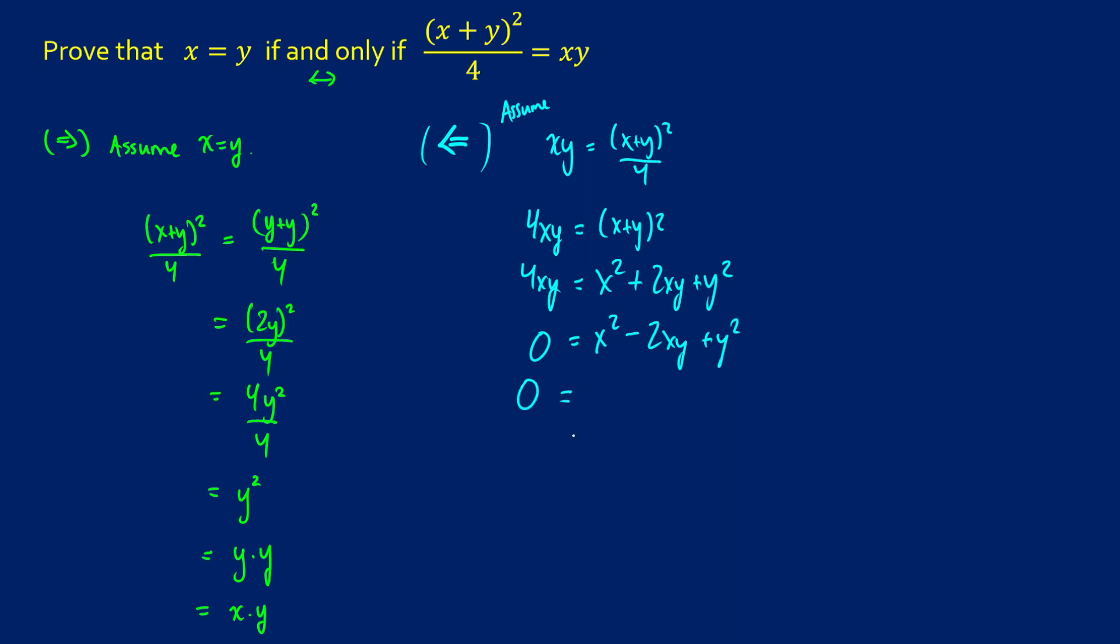Now we get 0 is equal to, well if we factor this out, it's going to be the same thing as (x - y)(x - y). So when 0 is equal to (x - y), this is going to imply that x is in fact equal to y. So if we start with the fact that xy is equal to (x + y)² / 4, we get the fact at the bottom that x is equal to y.